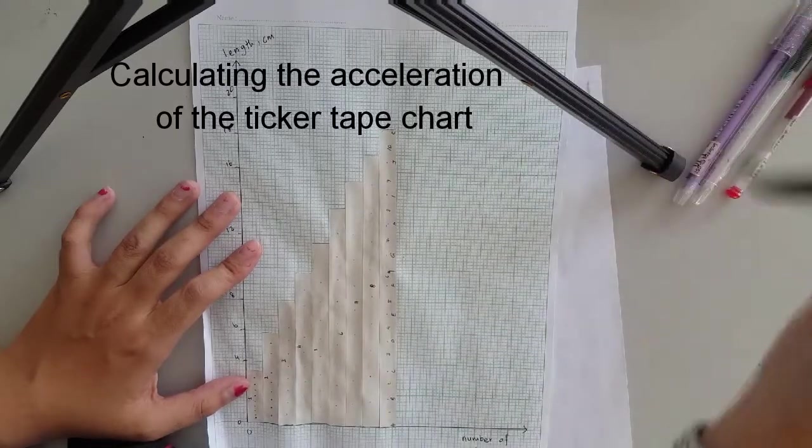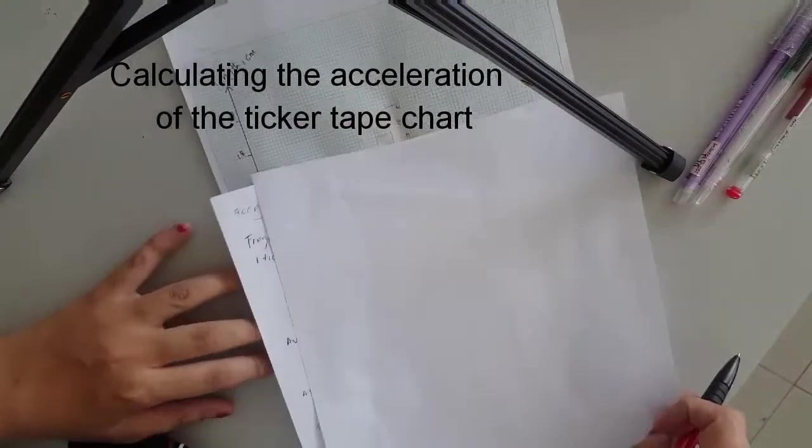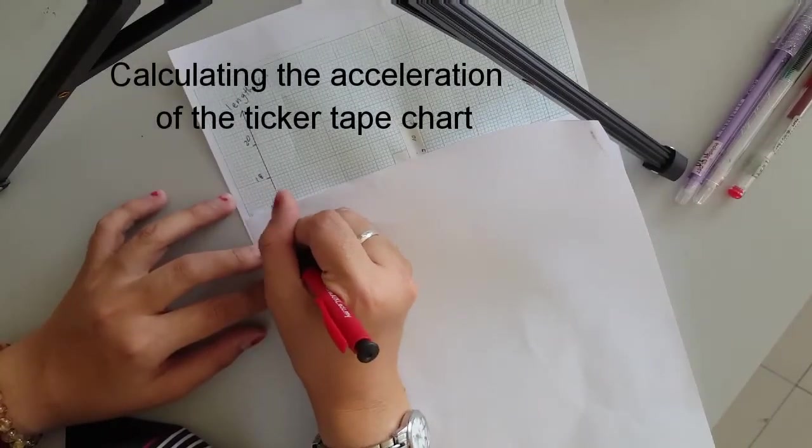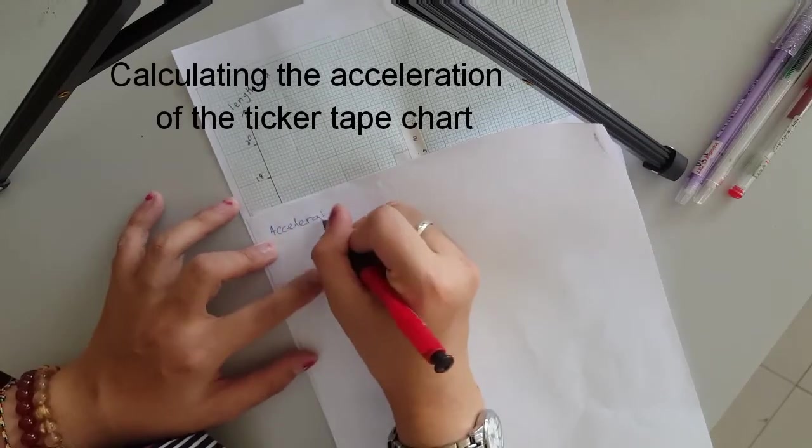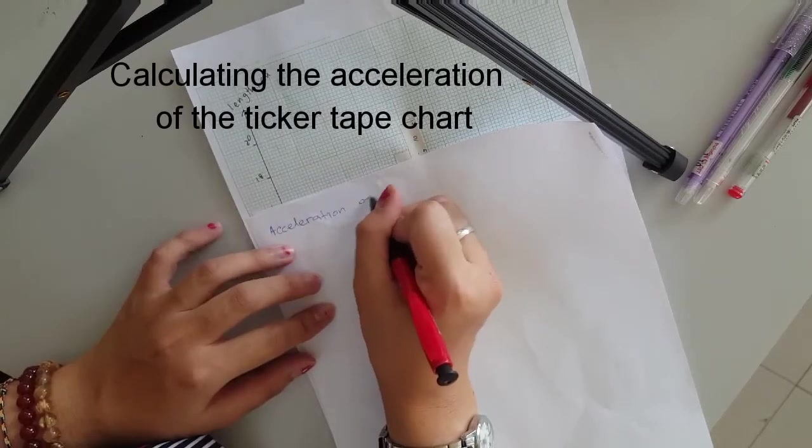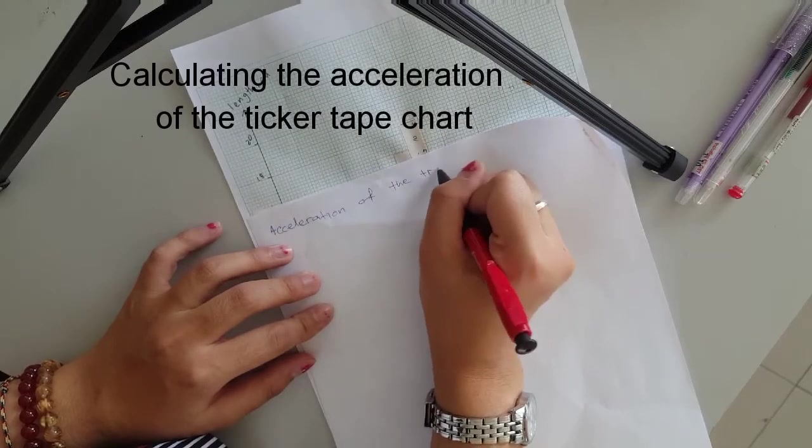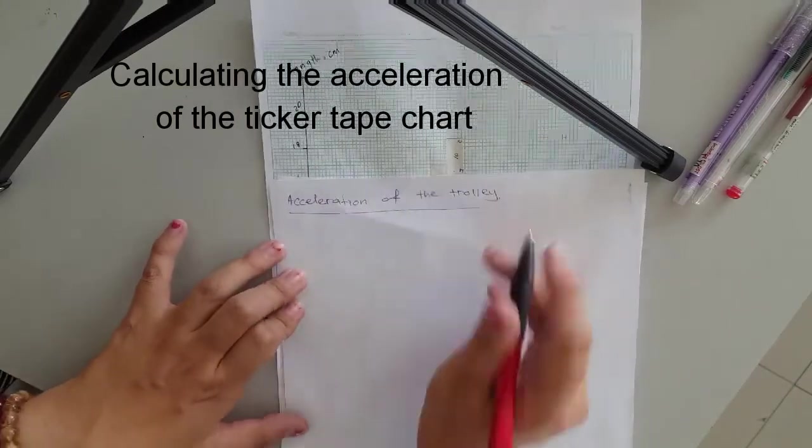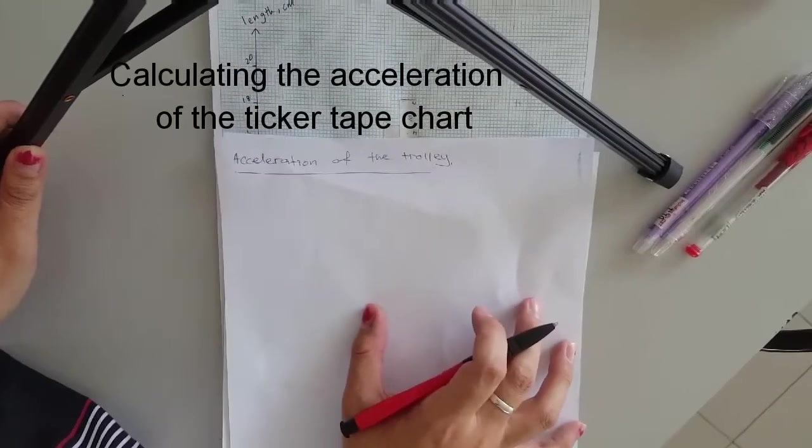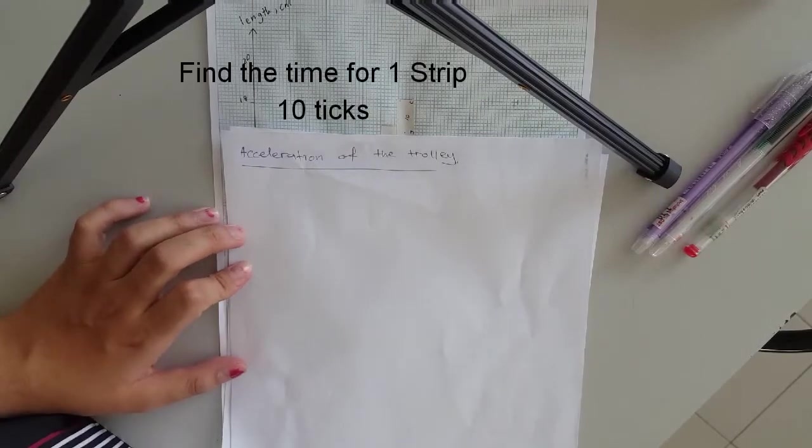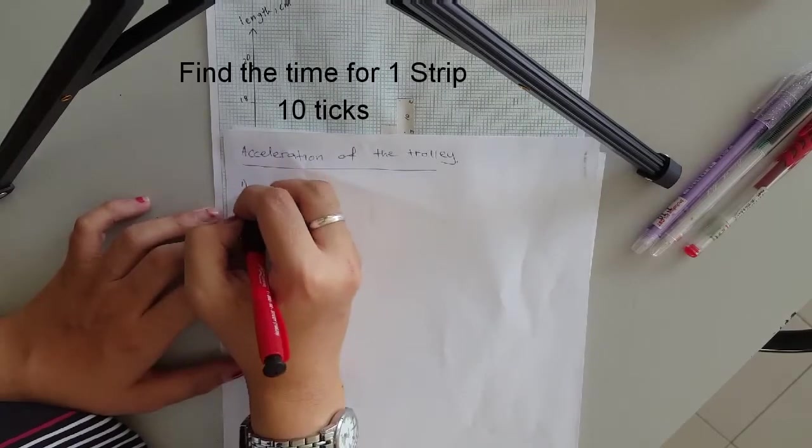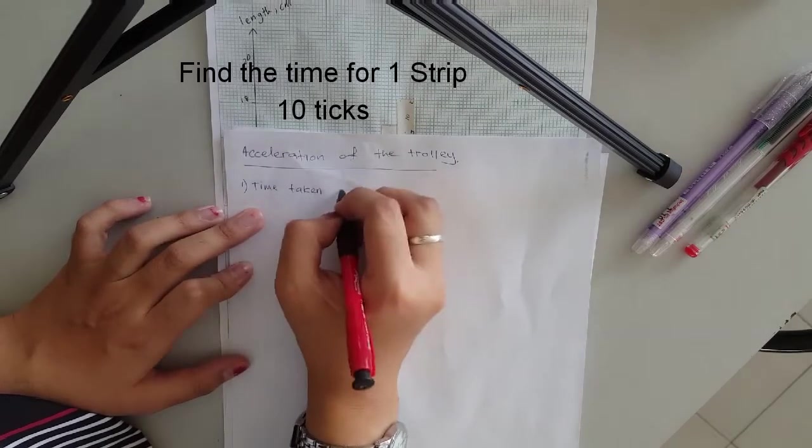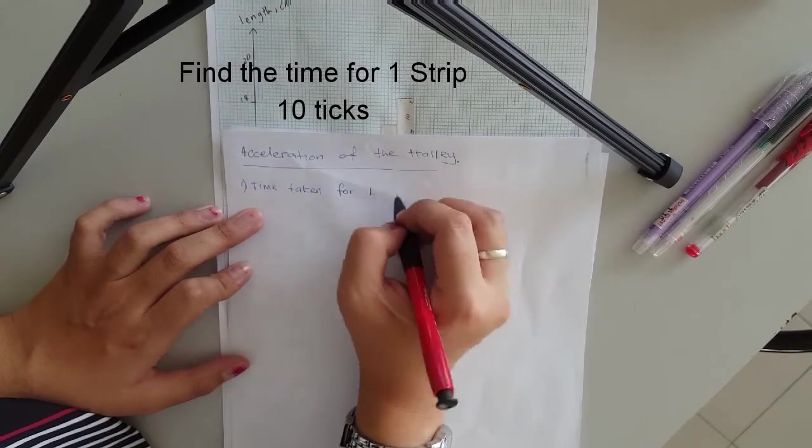So the most important thing right now is let's start. So we are to find acceleration of the trolley. So which means it's a whole entire chart. So let's see. The first thing we need to do is number one, time taken for one strip.